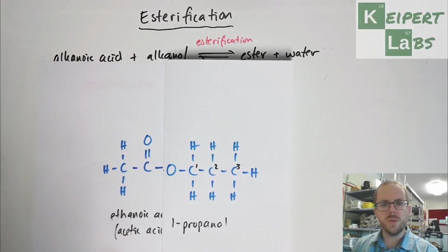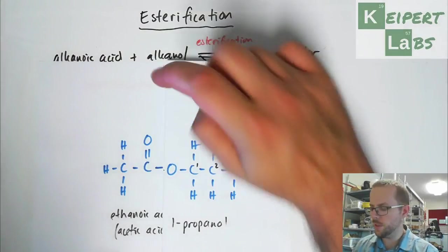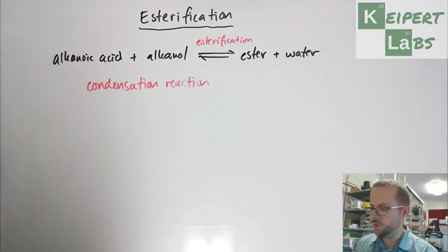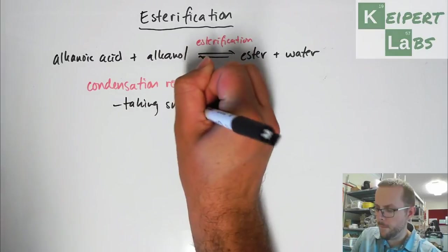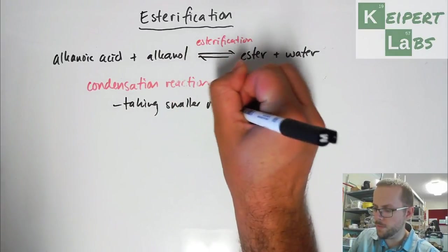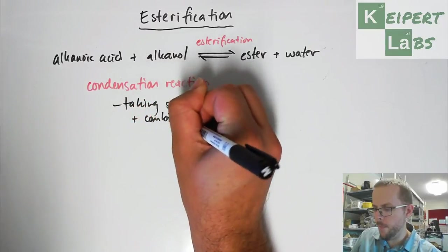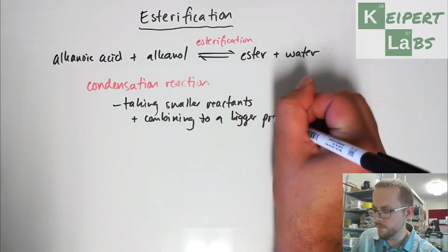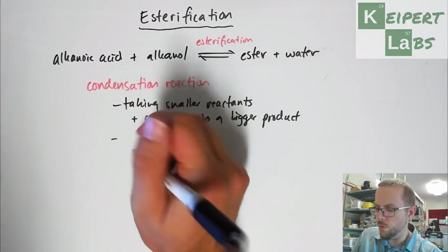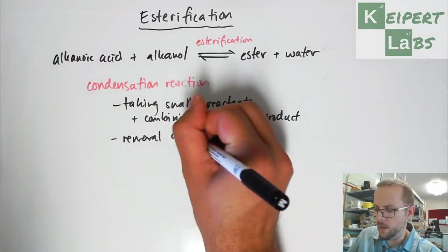So we've taken two components and we've connected them into one. And so we call this process condensation, a reaction where we're taking smaller reactants and combining them to a bigger product, like physically bigger product. And it also involves the removal of a water molecule.